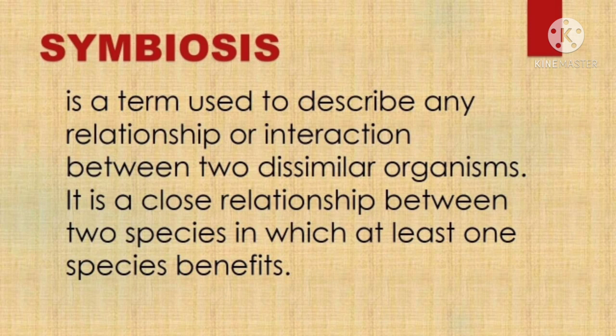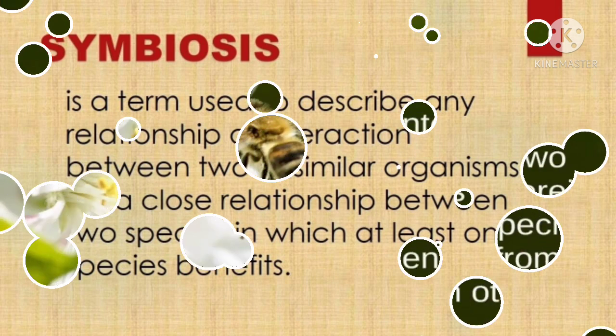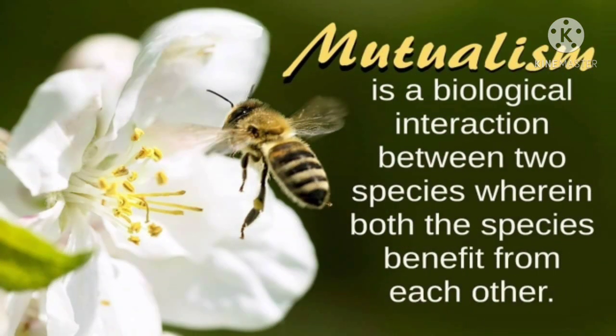In our environment, we have four different symbiotic relationships which includes mutualism, commensalism, predation, and parasitism. Now let us have the first symbiotic relationship, mutualism. Mutualism is an interaction wherein both the species benefit from each other.